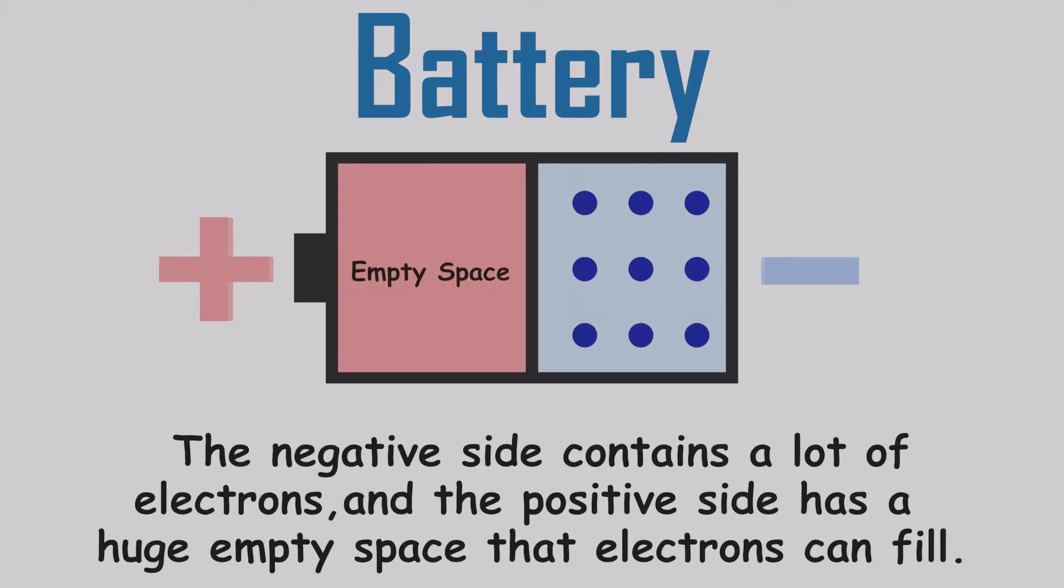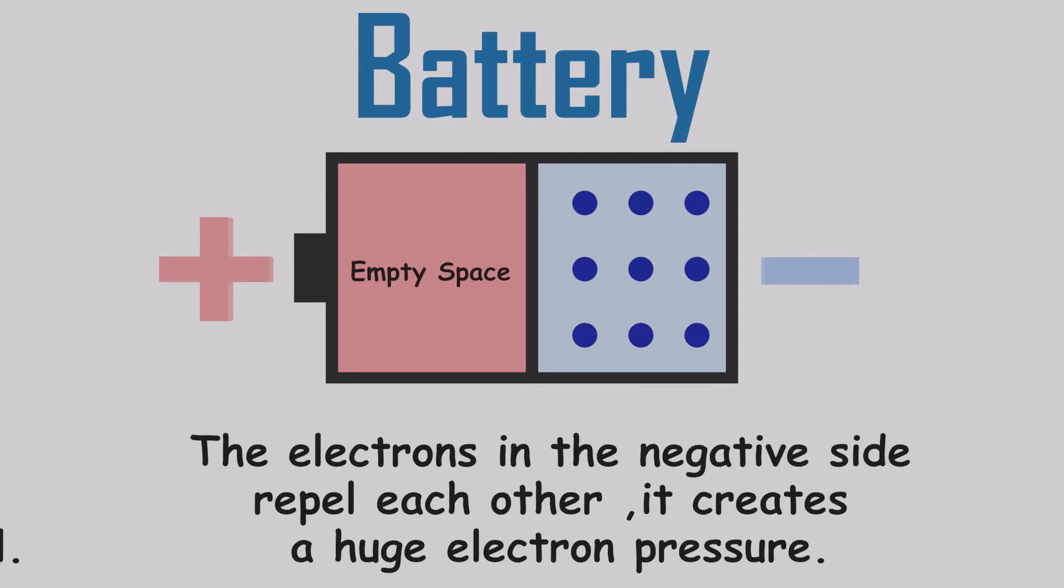This is a battery. A battery has two sides: positive and negative. The negative side contains a lot of electrons packed, and the positive side has a huge empty space that electrons can fill. These two sides are separated from a barrier that electrons cannot pass.